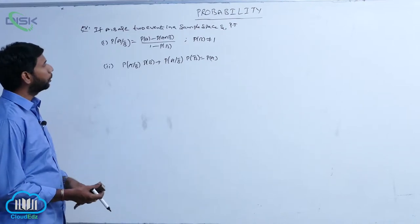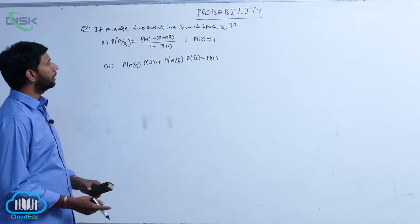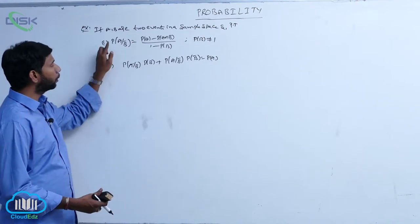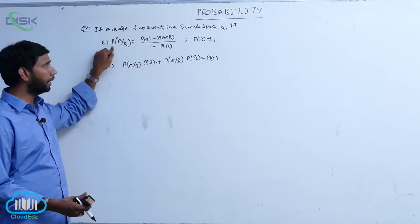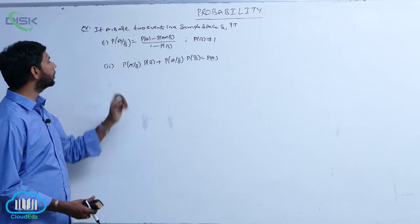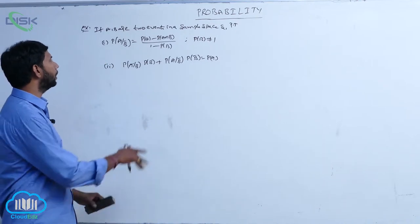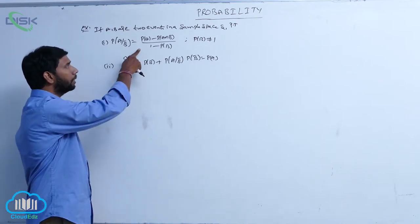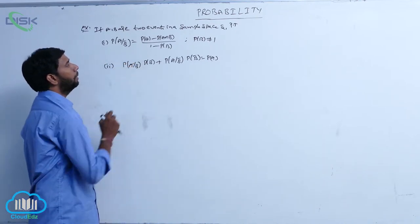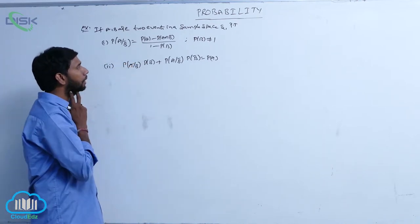Example: if A, B are two events in a sample space, then prove that P of A given B bar is equal to P of A minus P of A intersection B, divided by 1 minus P of B.